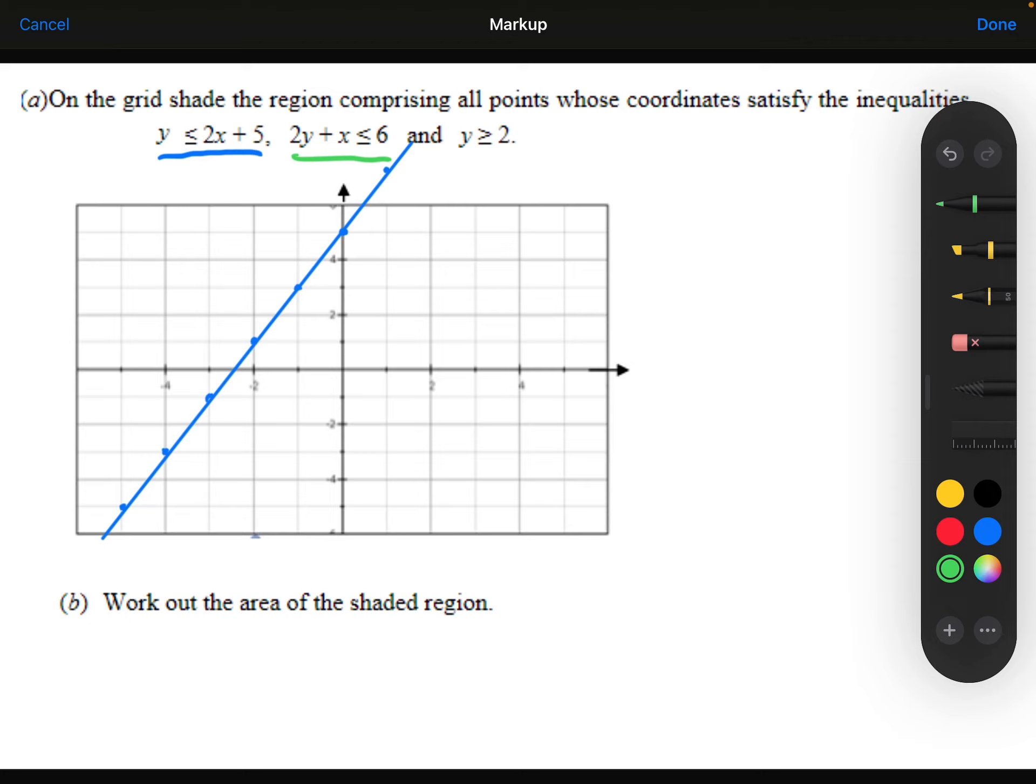Next, let's draw 2y plus x is less than or equal to 6. So I'm going to rearrange that a little bit. 2y has got to be less than or equal to 6 minus x, or y is less than or equal to 3 minus 1 half x.